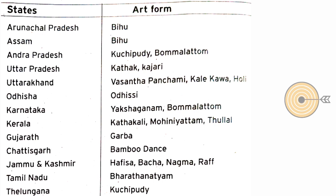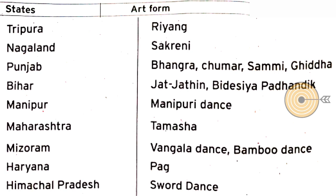Continuing the art forms table: Kerala — Kathakali, Mohiniyattam, Thullal. Gujarat — Garba. Chhattisgarh — Bamboo Dance. Jammu and Kashmir — Hafiza, Bachha, Nagma, Rouf. Tamil Nadu — Bharatanatyam. Telangana — Kuchipudi. Tripura — Riang. Nagaland — Zeliang. Punjab — Bhangra, Chumar, Sammi, Giddha. Bihar — Jat-Jatin, Videshiya, Bhathantik. Manipur — Manipuri Dance. Maharashtra — Tamasha. Mizoram — Vangala Dance, Bamboo Dance. Haryana — Pag. Himachal Pradesh — Sword Dance. These are the major art forms of other states of India.